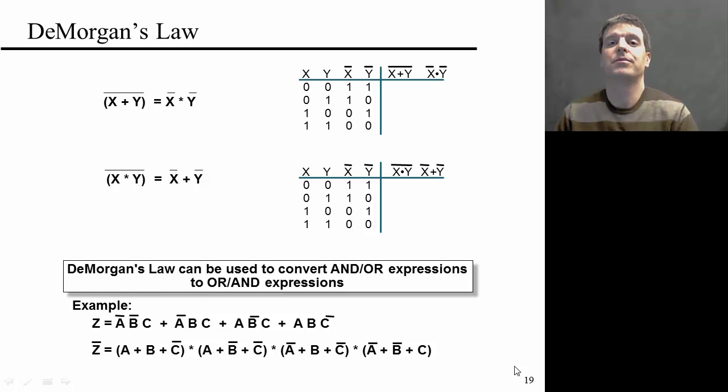Let me briefly introduce another tool that's extremely useful in Boolean minimization, which is DeMorgan's Law. DeMorgan's Law can effectively be used to convert AND/OR expressions to OR/AND expressions. So let me introduce the law.